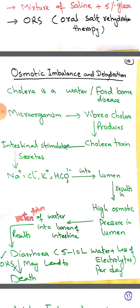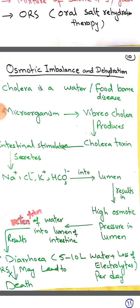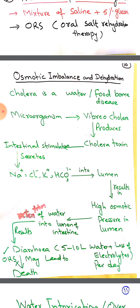Another phenomenon related to mixed dehydration is osmotic imbalance. It depends on a colligative property — osmotic pressure — which depends on the number of solute particles: more solute means more osmotic pressure. Taking the example of cholera, a foodborne or waterborne disease caused by Vibrio cholerae, this microorganism produces a toxin known as cholera toxin.